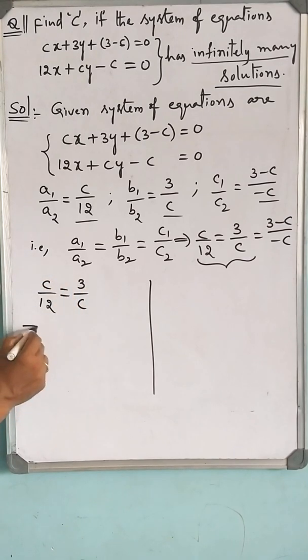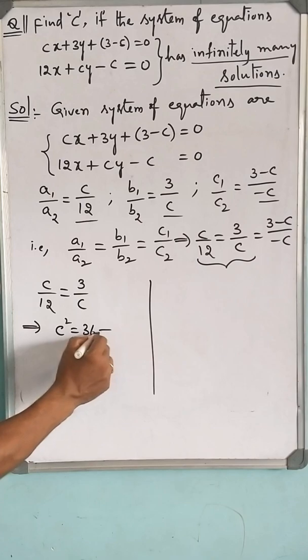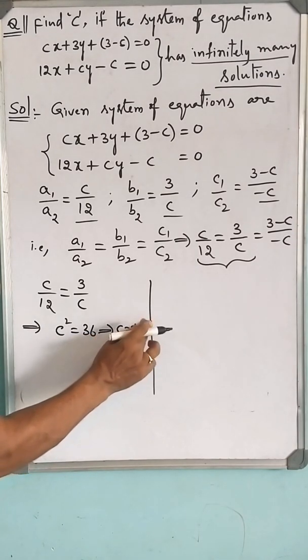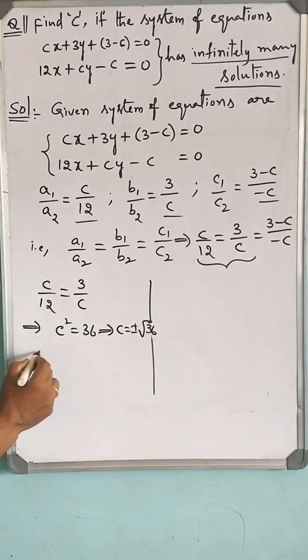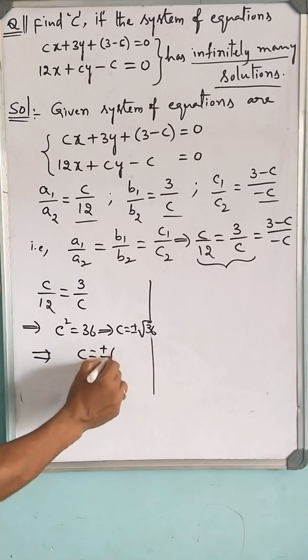C squared equals 36, C equals plus or minus root 36, which implies C equals plus or minus 6.